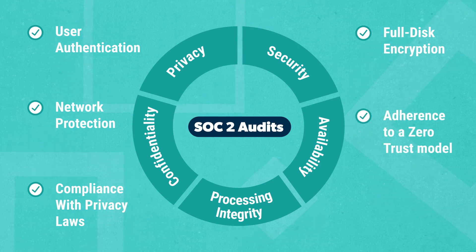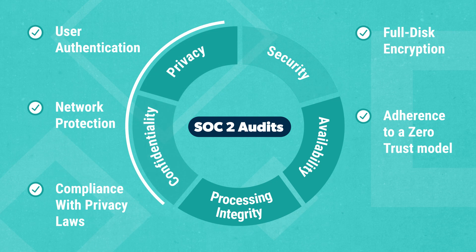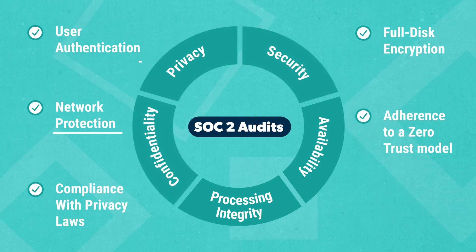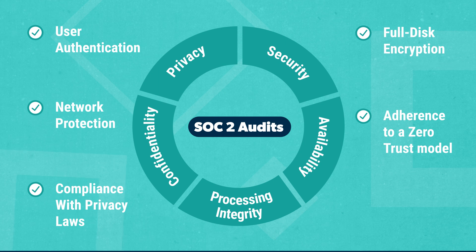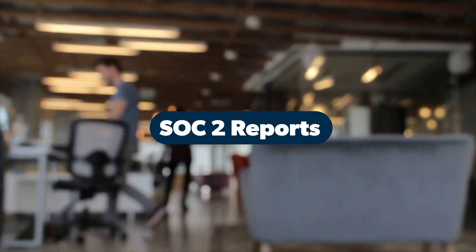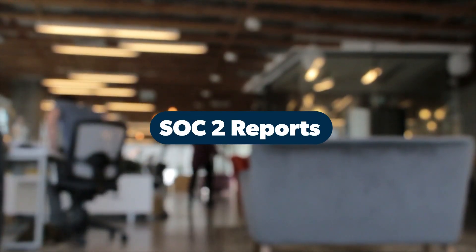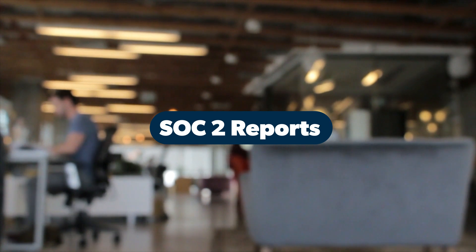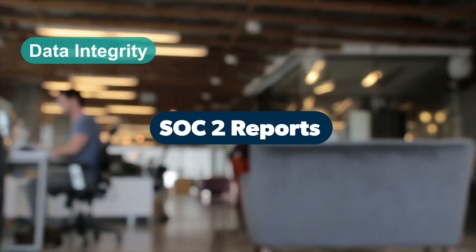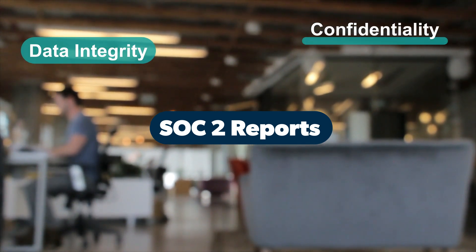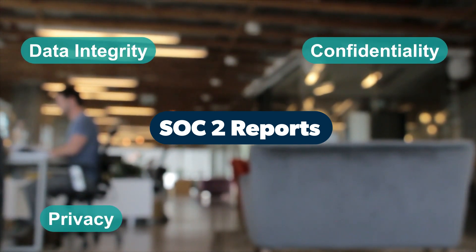So before undergoing an audit, upper management must review the current status of each of these categories in their organization and determine which ones they'd like auditors to review and include in their reports. In general, SOC 2 reports reflect an organization's devotion to data integrity, confidentiality, privacy, and safety.